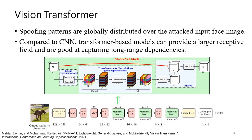Furthermore, considering that the spoofing patterns are globally distributed over the attacked face image, transformer-based models that can capture long-range dependencies are more suitable for FAS tasks. To improve computing performance, we adopt a lightweight but efficient transformer model, MobileViT, as the backbone in this work.